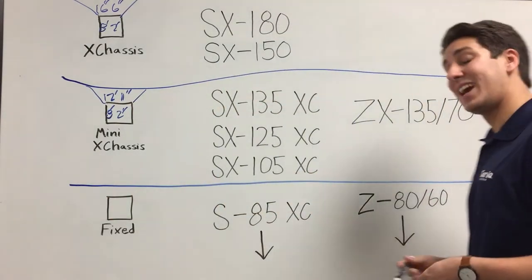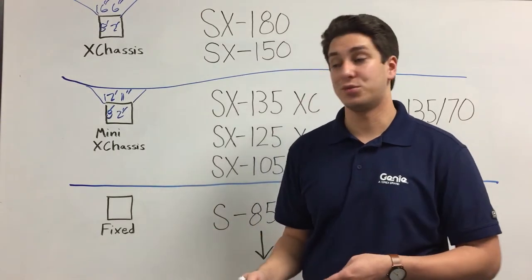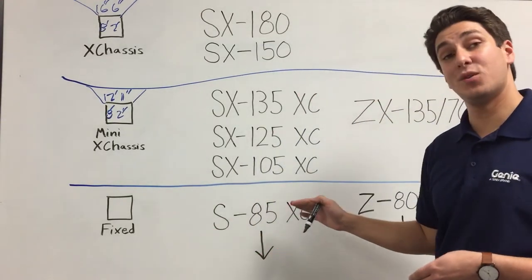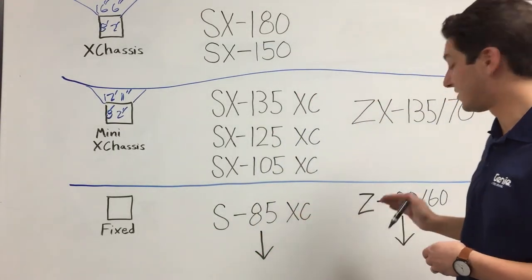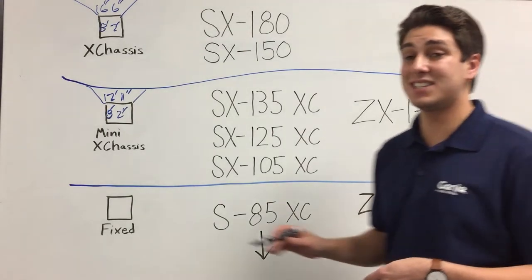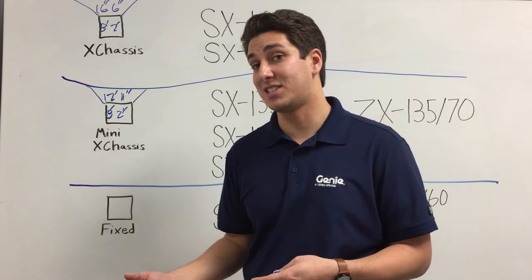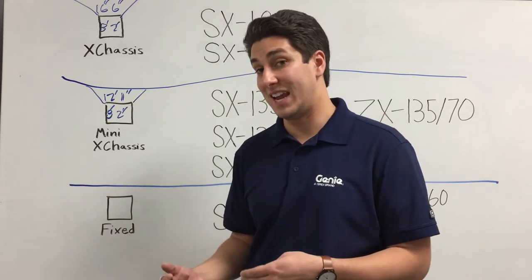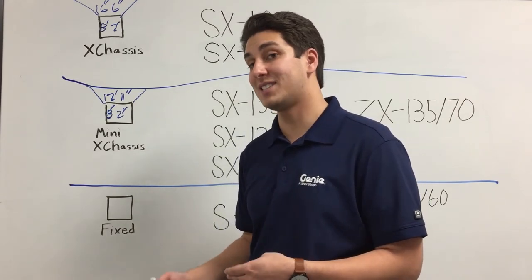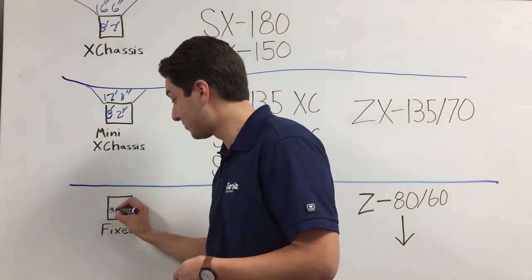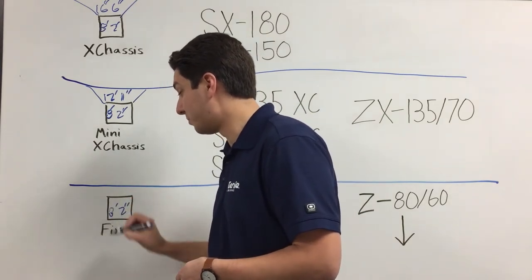The last category is really for all of our booms under 100 feet, so it starts with the S85XC as well as the Z8060, and this is our fixed-width chassis. There's several different widths for fixed-width chassis, many of them being more narrow than 8 feet, 2 inches, but the widest is 8 feet, 2 inches for transport, just as with our other booms. And again, that's fixed width, so there's no extending or retracting axles.